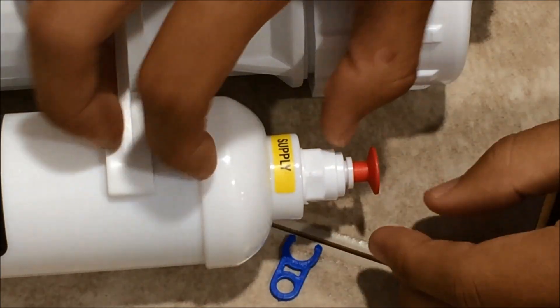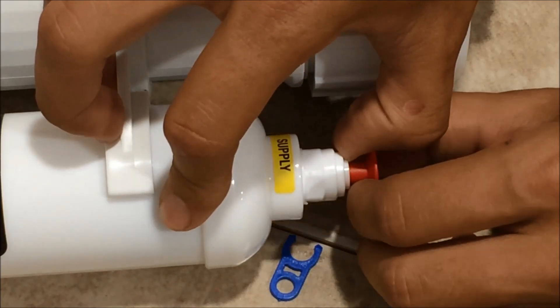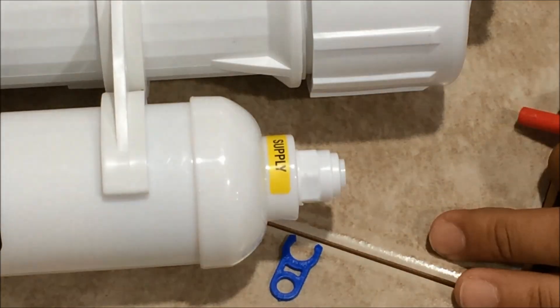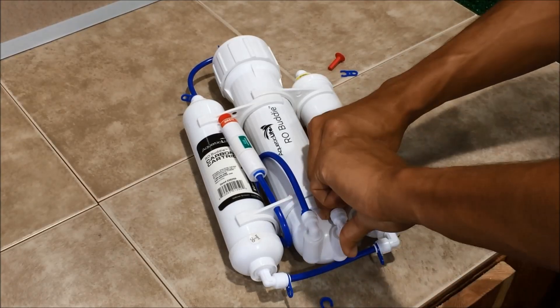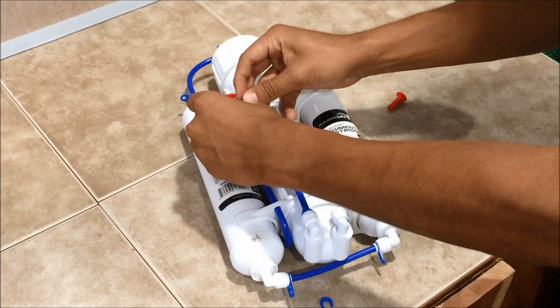To do that you'll take off the blue clip, push down on the white collar, and then pull out the plug. You'll remove the remaining two shipping plugs from the filtered side and the wastewater side as well.